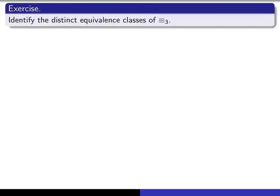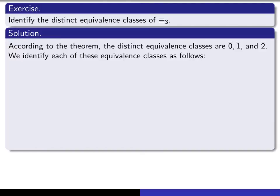Let's apply this notation to identify the distinct equivalence classes of congruence modulo 3. The distinct equivalence classes for general m are those of 0, 1, 2, …, m−1. Here m is 3, so the equivalence classes are 0-bar, 1-bar, and 2-bar — just remember we're talking about congruence modulo 3, since that's lost in this bar notation.